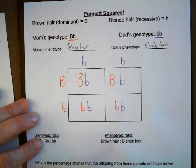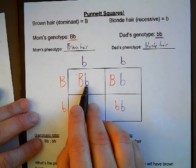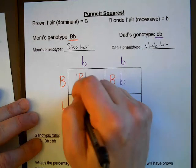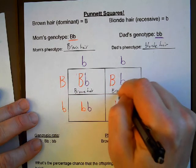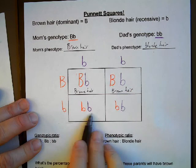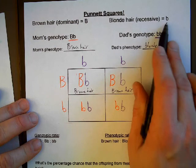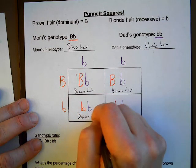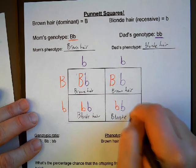Then I come back to my purple pencil for dad's alleles. I take the lowercase b here and put it in every box below it — lowercase b here and lowercase b here. Same thing for the other column: take this lowercase b and put it in the boxes below — lowercase b, lowercase b. Now I have the genotypes of the possible offspring. If I have a capital B and a lowercase b — dominant and recessive — the dominant covers up the recessive, so this child would have brown hair. The same is true here — this child would have brown hair. This offspring has two lowercase b's, so it would have blonde hair. This offspring, for the same reason, would also have blonde hair.